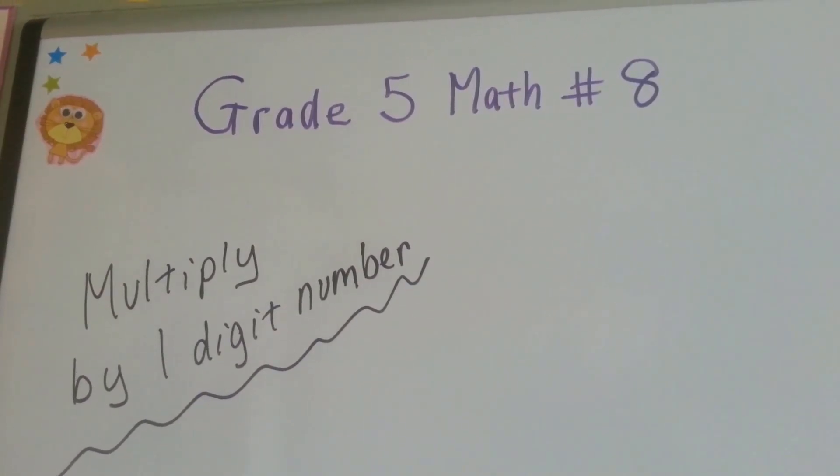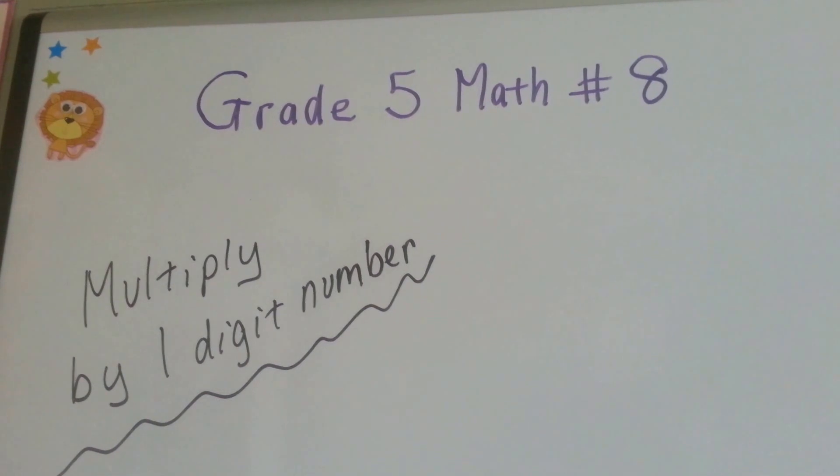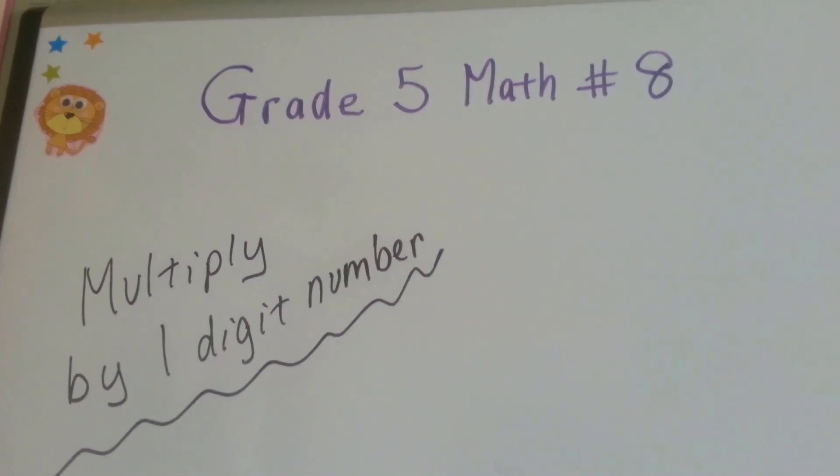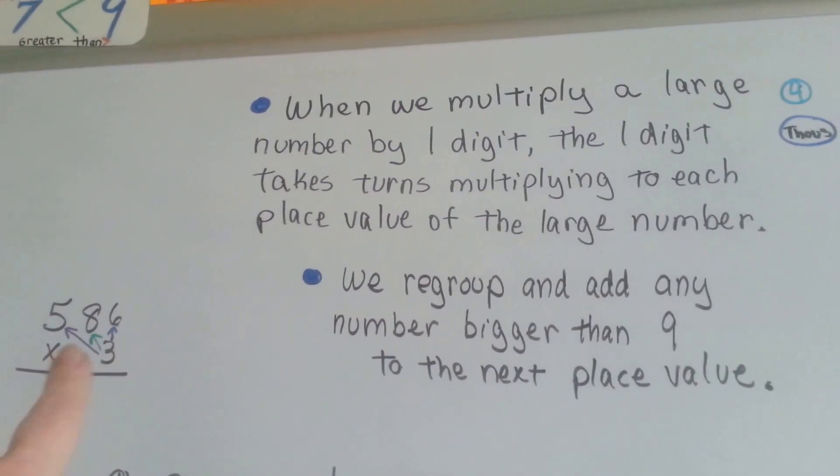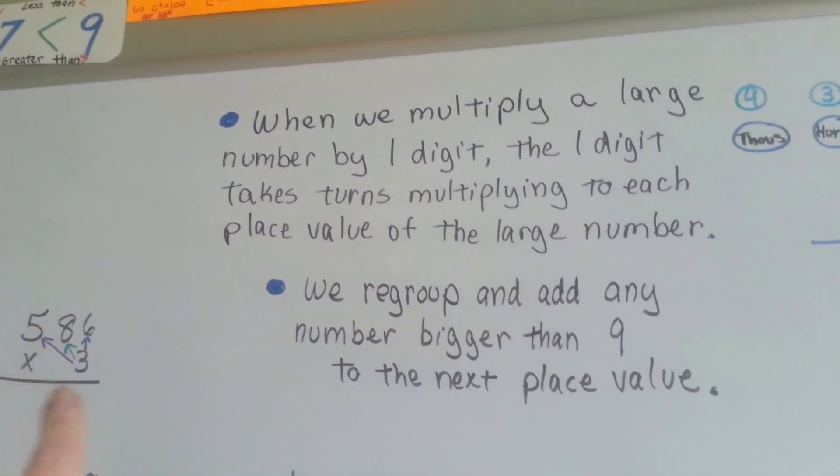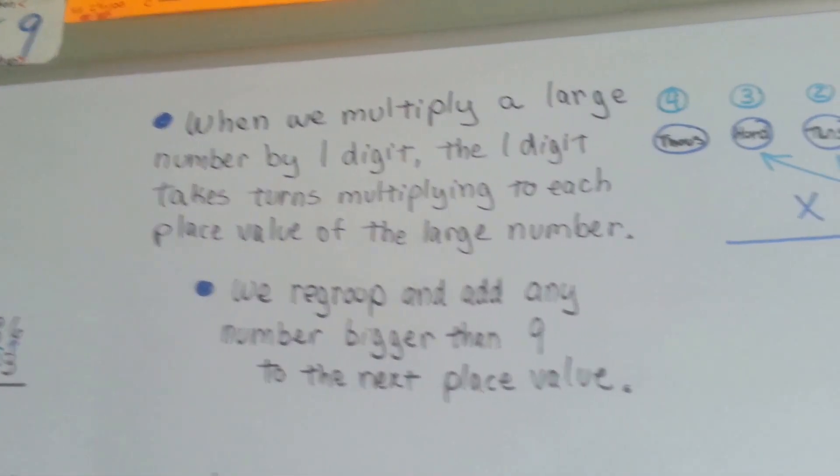Grade 5 math number 8: Multiply by one-digit number. It's going to be a problem like this, whether it's hundreds or thousands, multiplied by a one-digit number.